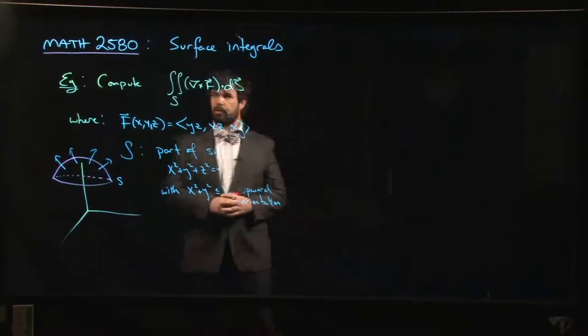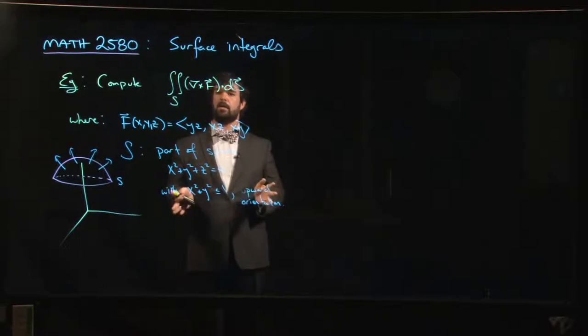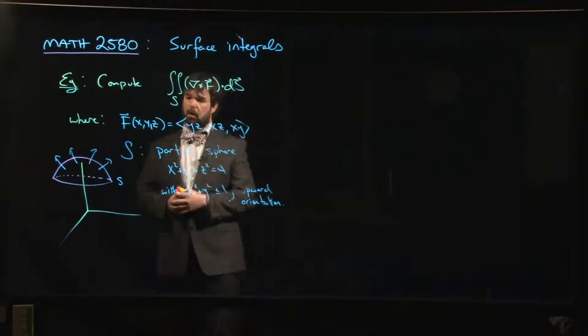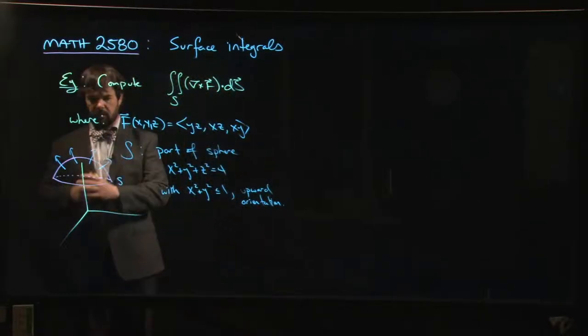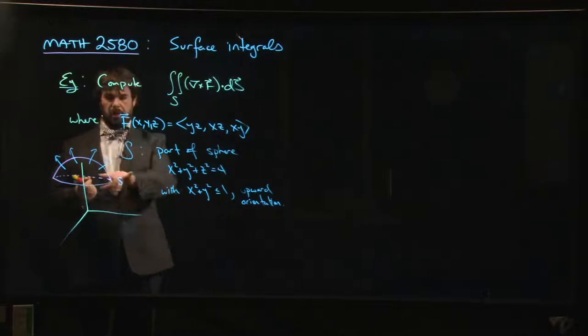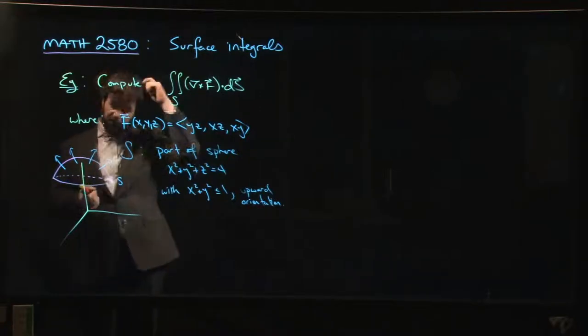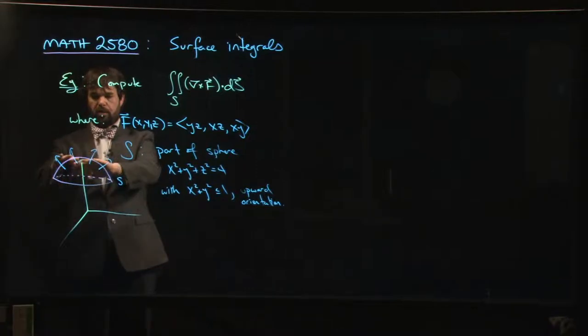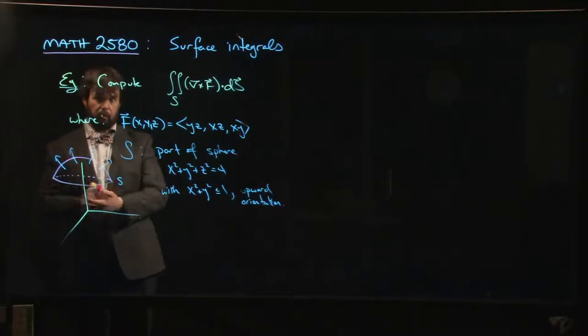Okay, so here's our final example with Stokes Theorem. We want to compute the surface integral of a curl. Here's our vector field. Here's our surface. So our surface is the cap of a sphere, the part of the sphere with x squared plus y squared less than or equal to 1. It's the portion of a larger sphere that fits inside of a smaller cylinder.